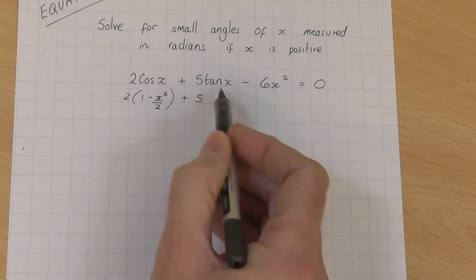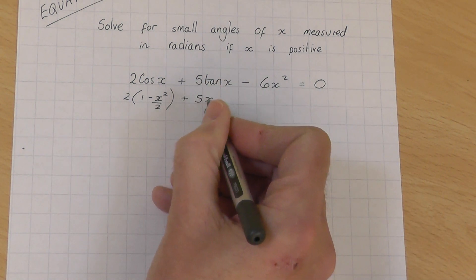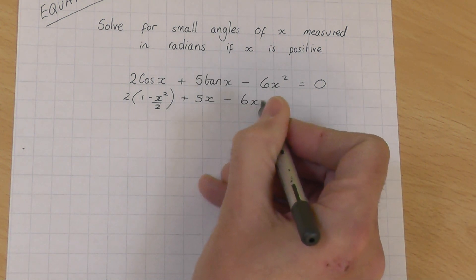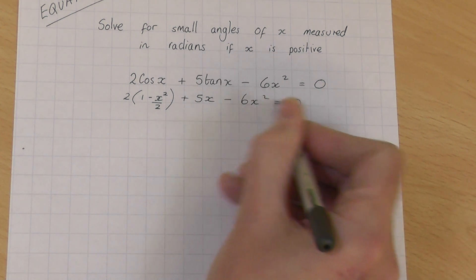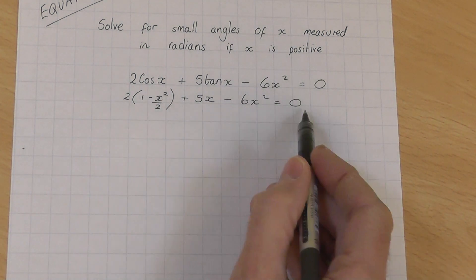Plus 5 lots of tan x is approximately the same as x in radians. Take away the 6x squared equals 0, those two things stay the same. So we end up with this equation.